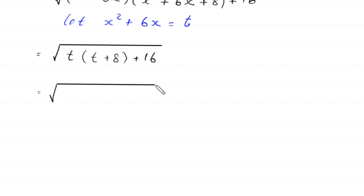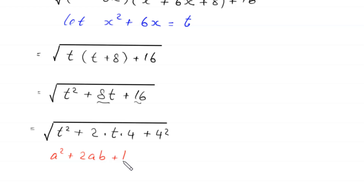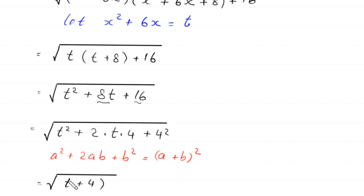Next, square root of t(t+8)+16 becomes square root of t²+8t+16. This 16 can be written as 4², and 8t can be written as 2·t·4. By using the algebraic identity a²+2ab+b² = (a+b)², this expression becomes square root of (t+4)².